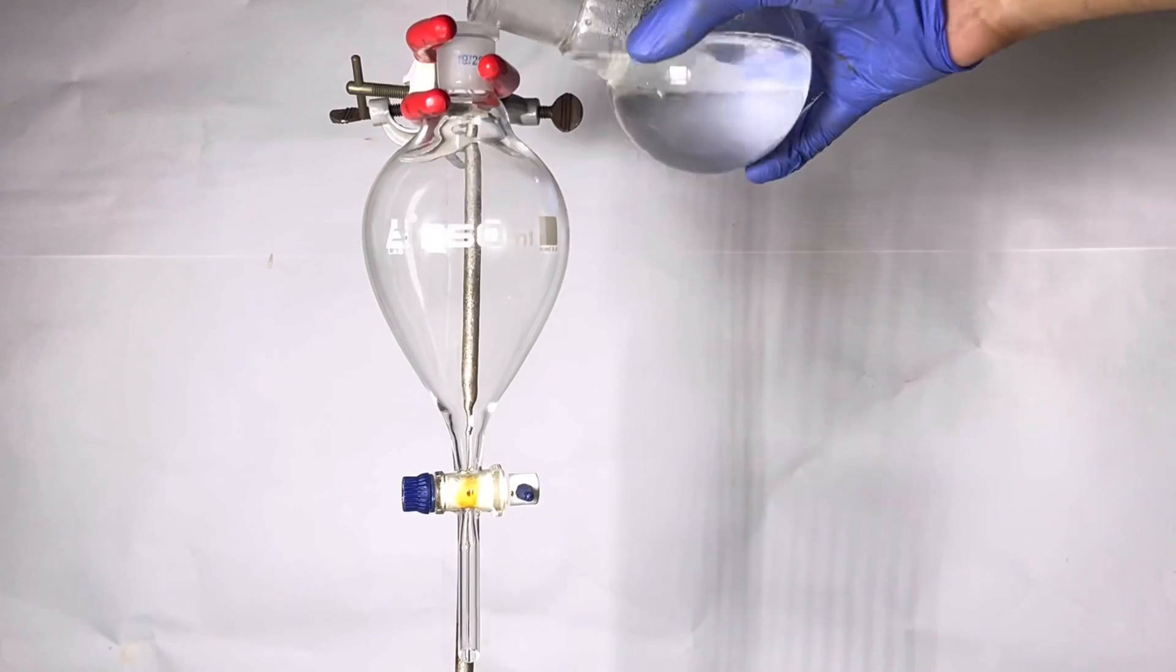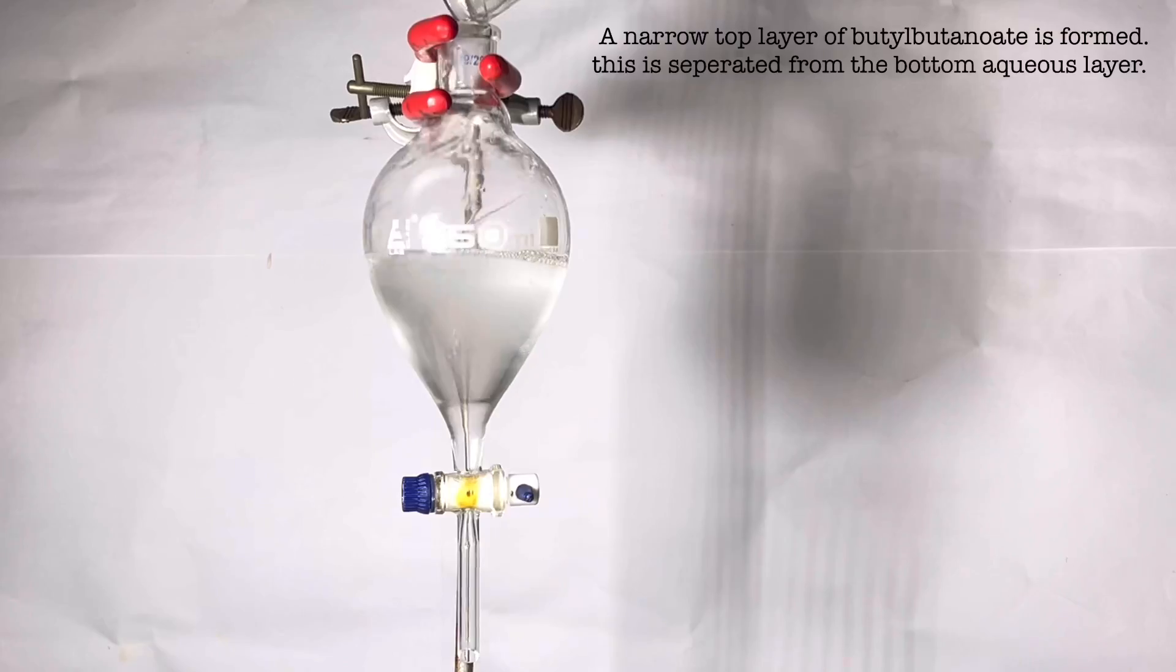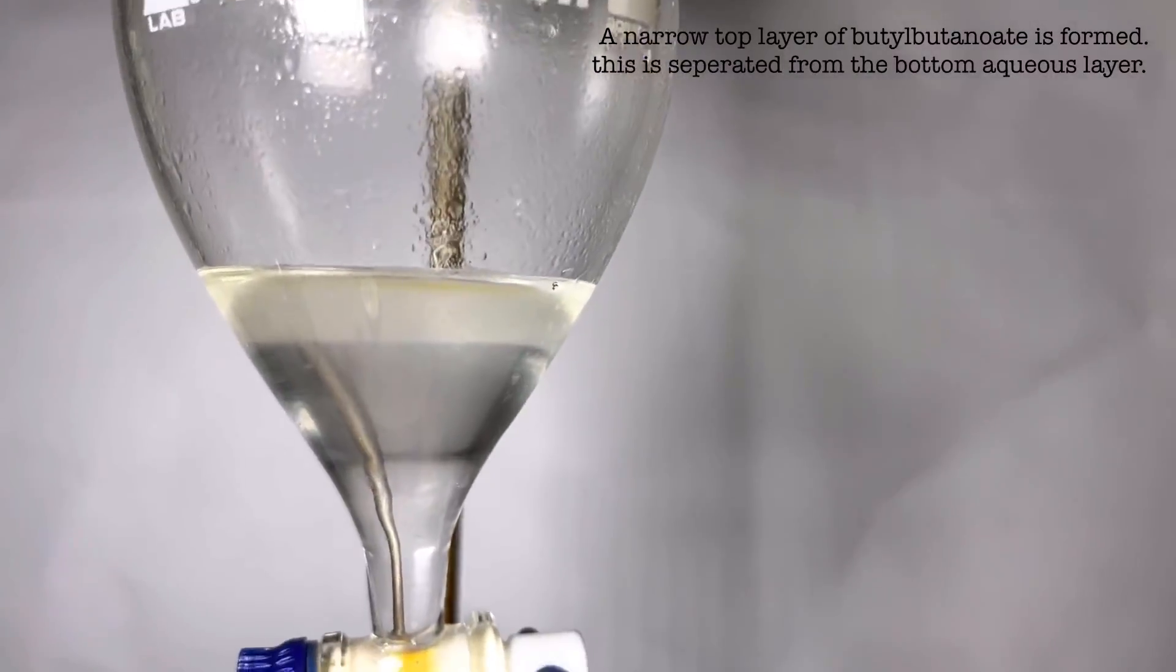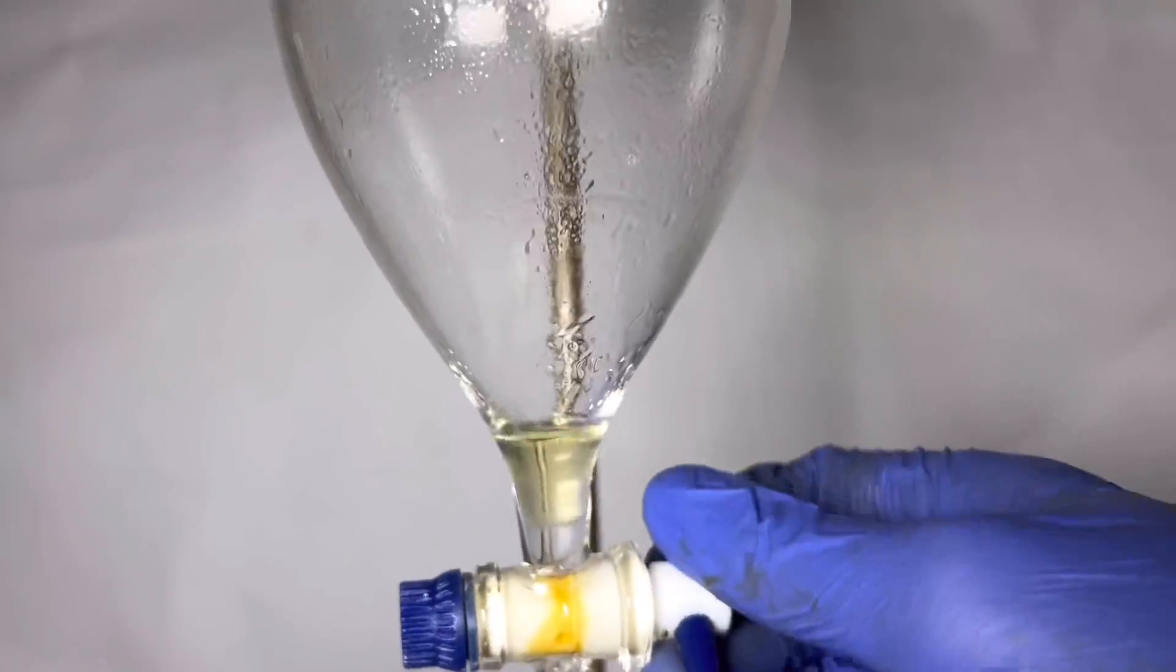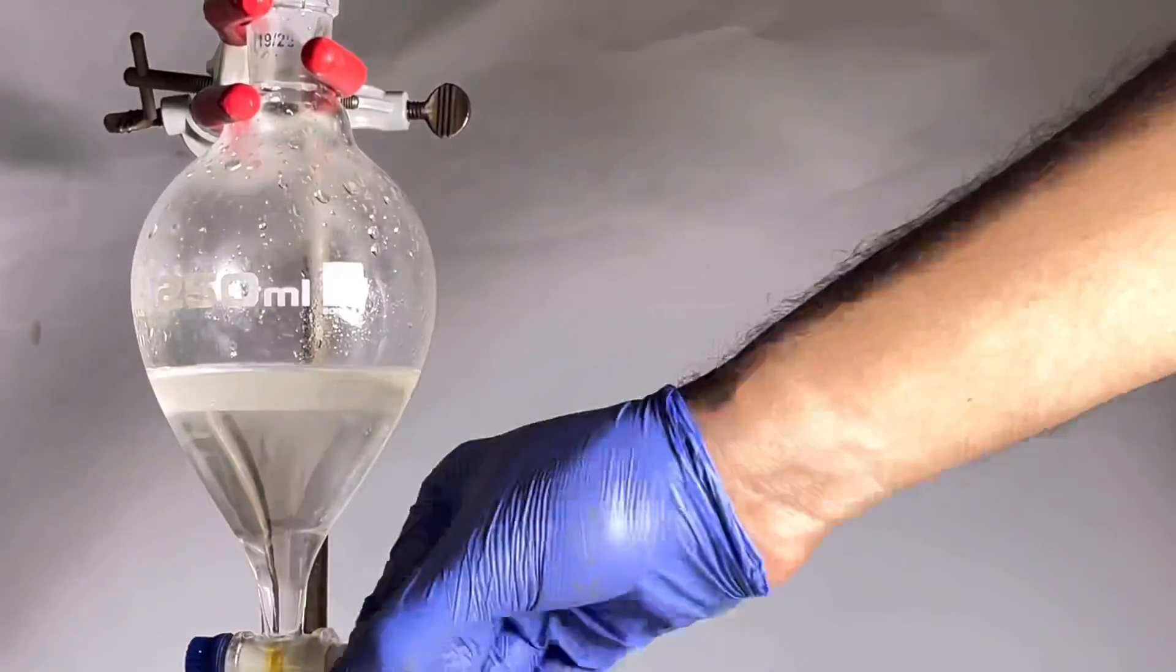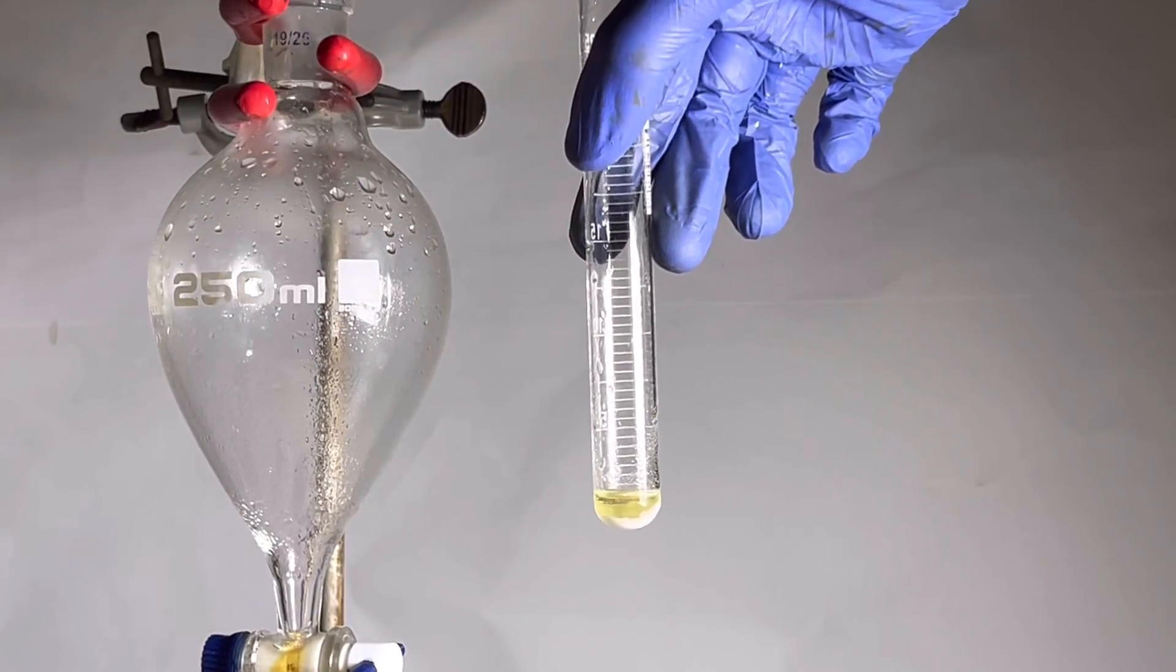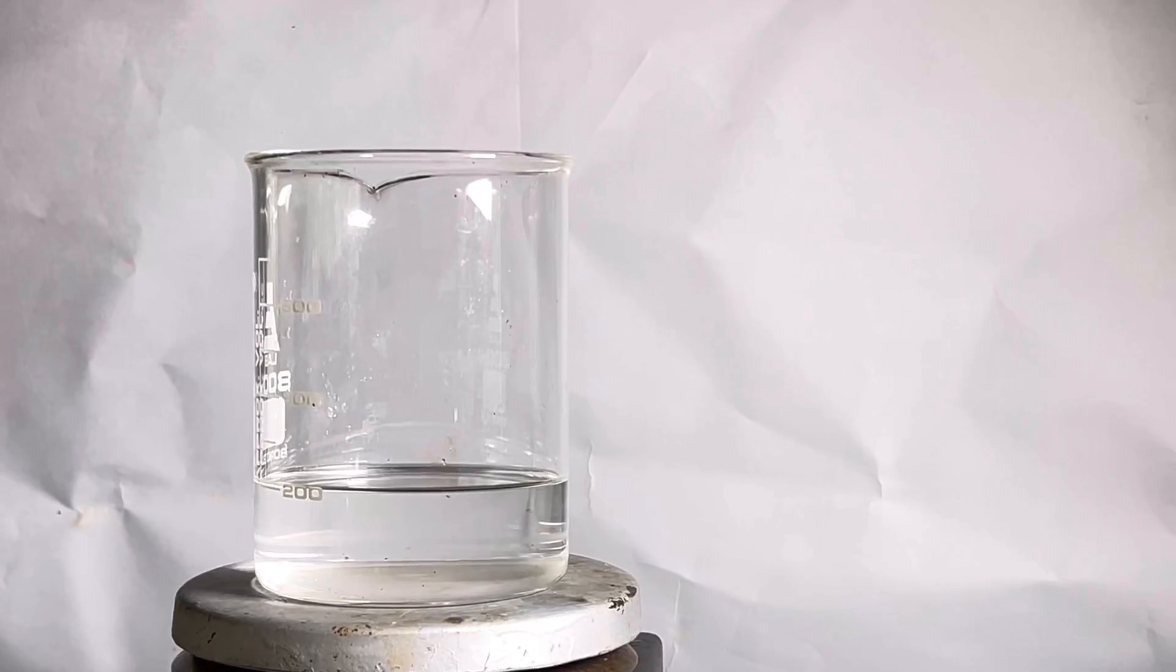Now the contents of the receiving flask was transferred to a separatory funnel. On the top we see a small separate layer and that is the butyl butanoate ester. The bottom aqueous layer contains the butyric acid. The aqueous layer was collected in a beaker and the top butyl butanoate layer was washed again with distilled water and the water layer was discarded. The butyl butanoate was collected in a small test tube with some anhydrous sodium sulfate to dry it. Butyl butanoate has a very pleasant smell similar to pineapples. It was then stored in a small dram vial.